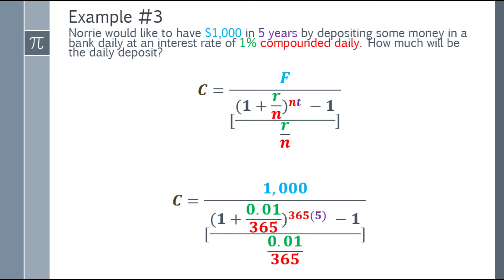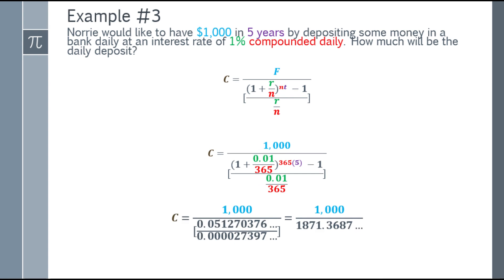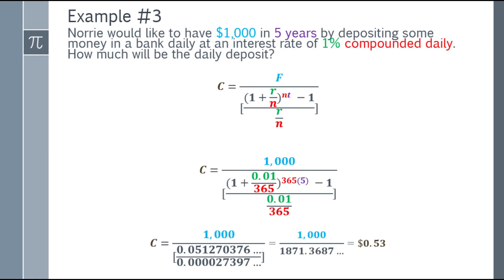Let's simplify. Start with the parentheses: 1 plus 0.01 over 365, with an exponent of 365 times 5, then subtract 1, you get 0.05127037 and so on. Then 0.01 over 365 equals 0.000027397 and so on. Divide the bottom fraction: 0.05 something divided by 0.00002 equals 1871.03687. Lastly, for our final answer, 1,000 divided by 1871.03687 equals 53 cents.